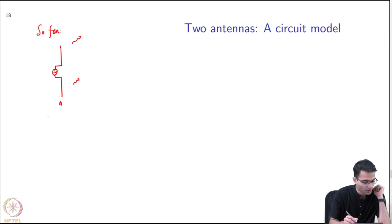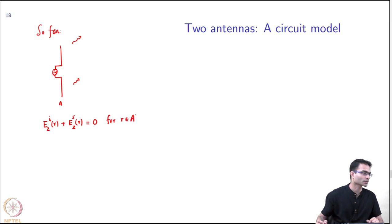To solve this problem, what was the boundary condition? We said that E_z^i(R) plus E_z^scattered(R) is going to be equal to 0, for R belonging to A. In the conductor, it is a perfect conductor, the total field is 0.